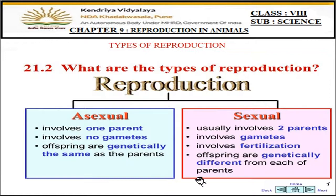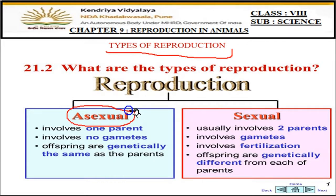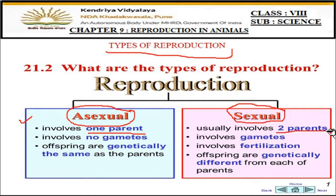Now let us look at the different types of reproduction. Reproduction is basically of two types: asexual reproduction and sexual reproduction. In asexual reproduction, only one parent is required. In sexual reproduction, two parents are required — one male and one female.